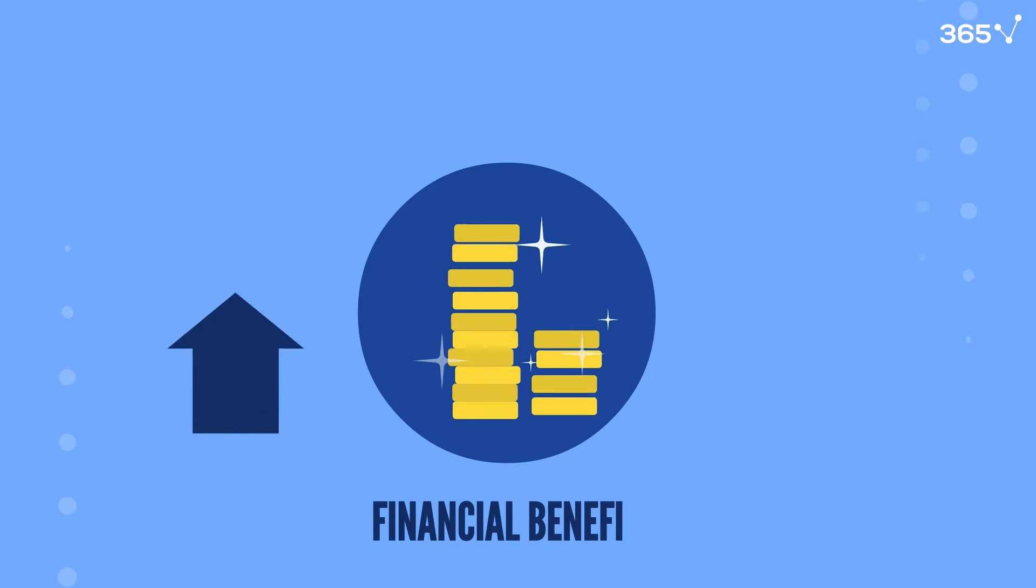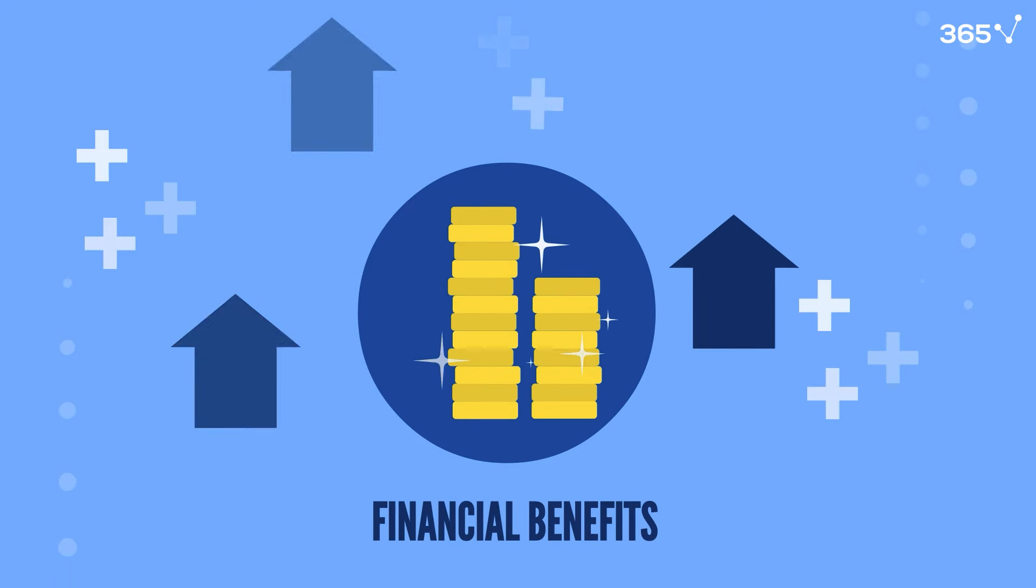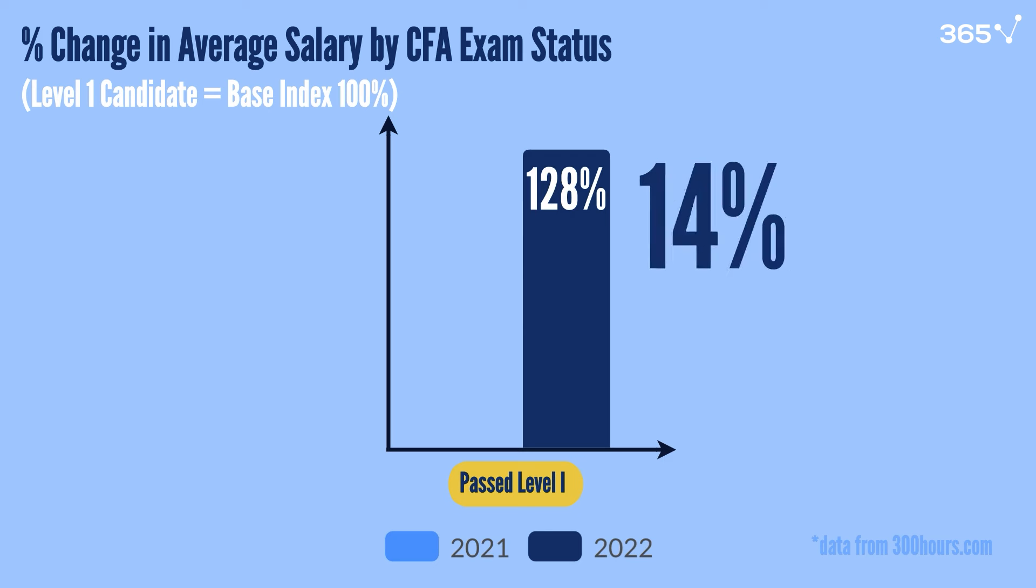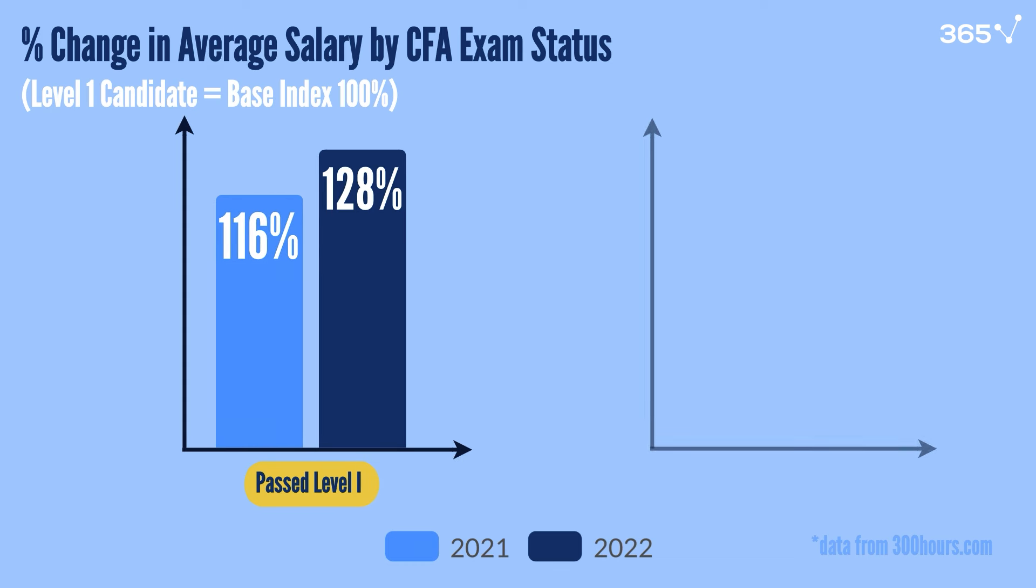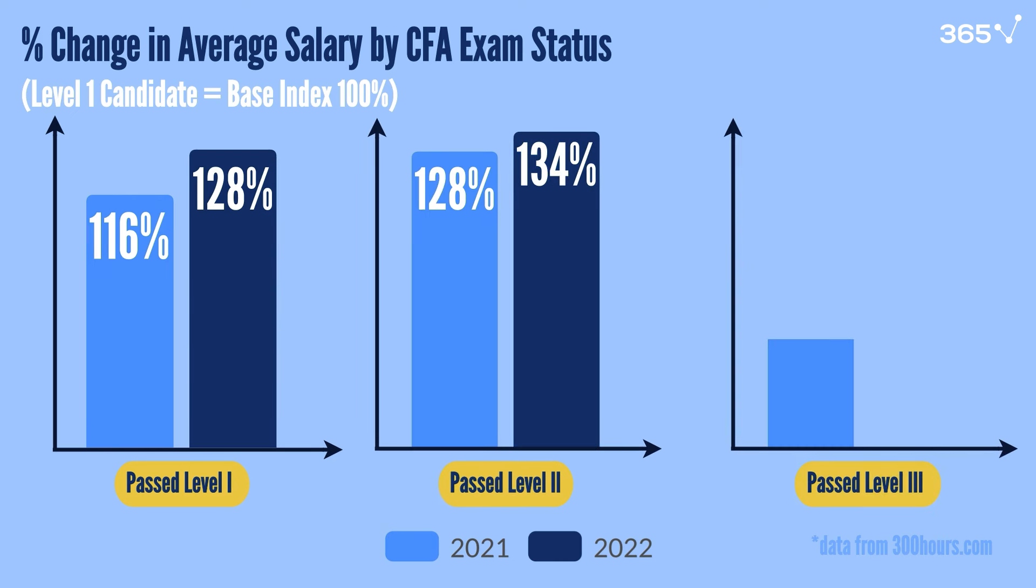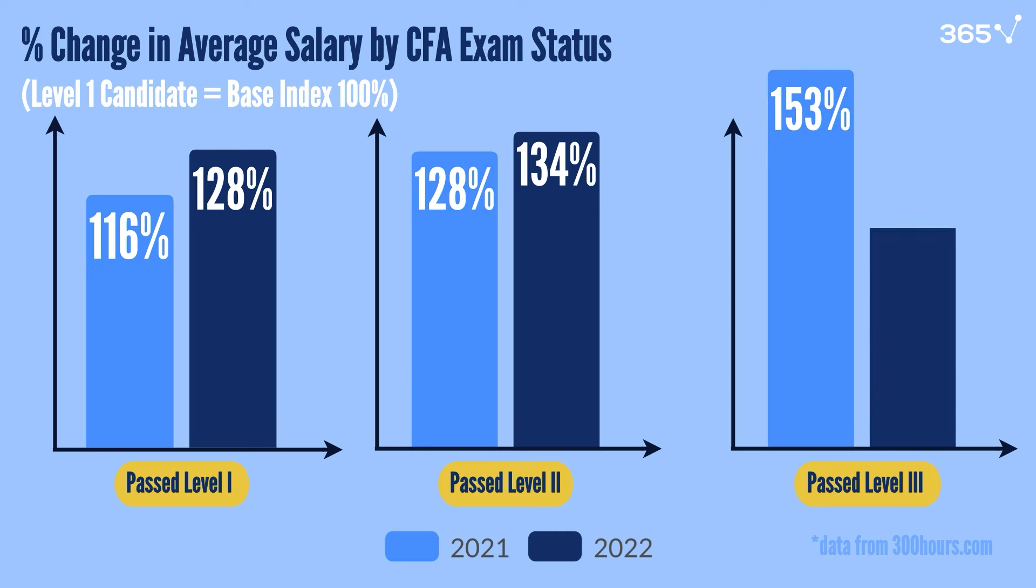But there are also immediate financial benefits to progressing through the CFA exams, even before becoming a charterholder. According to latest analysis of CFA salary data, in 2022, candidates who passed Level 1 saw a 28% increase in total compensation, up from 16% in 2021, indicating an earlier paycheck for CFA progression. CFA candidates who passed Level 2 saw a 34% increase in total compensation. Those who passed Level 3 or are charterholders earned 53% more than those yet to pass Level 1.